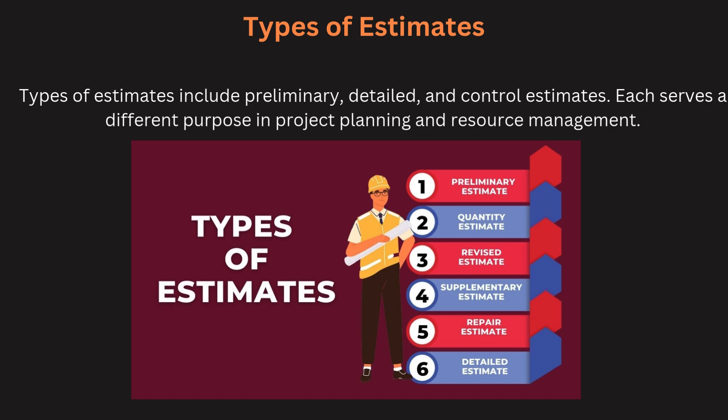Now, types of estimates. There are several types of cost estimates: preliminary estimates, detailed estimates, and control estimates. Preliminary estimates provide a rough idea of cost early in the project, while detailed estimates are more accurate and based on comprehensive analysis. Control estimates help track actual costs against budget figures.